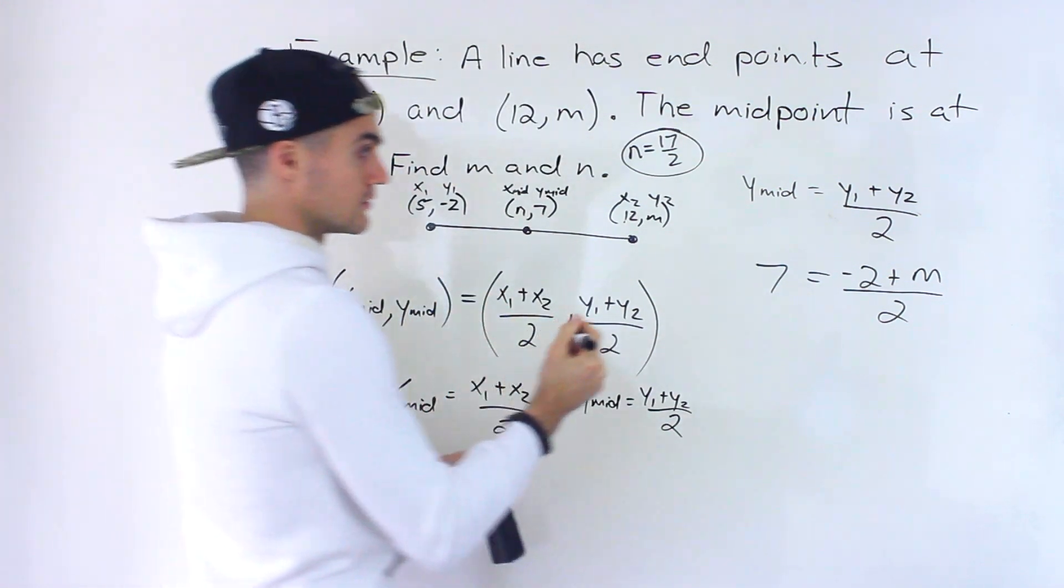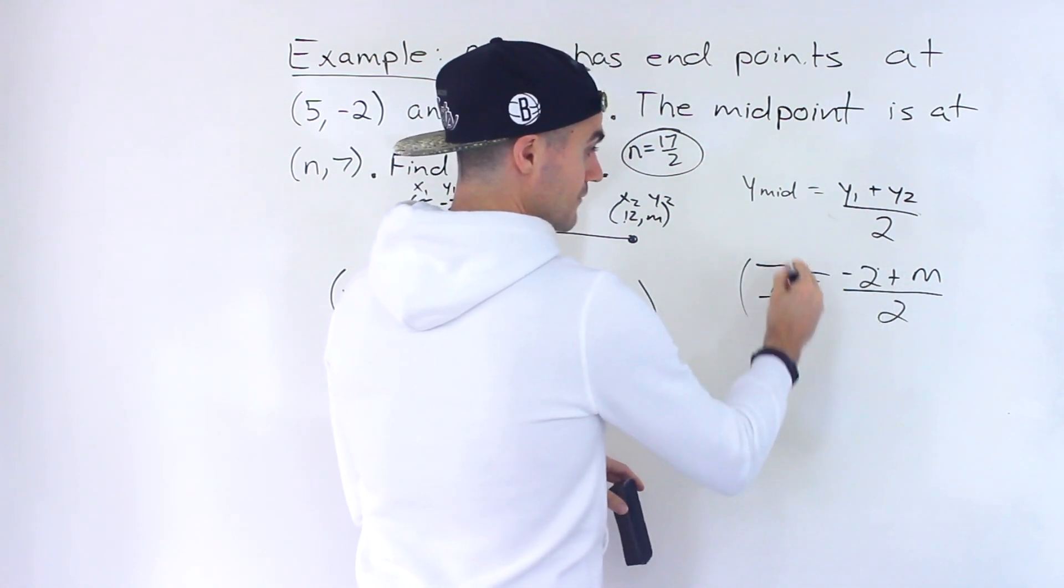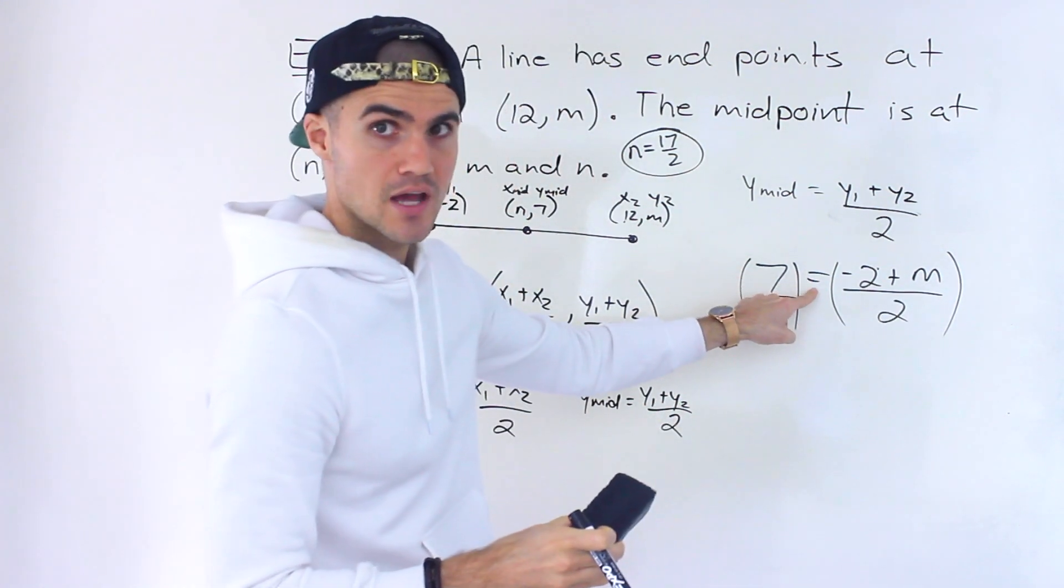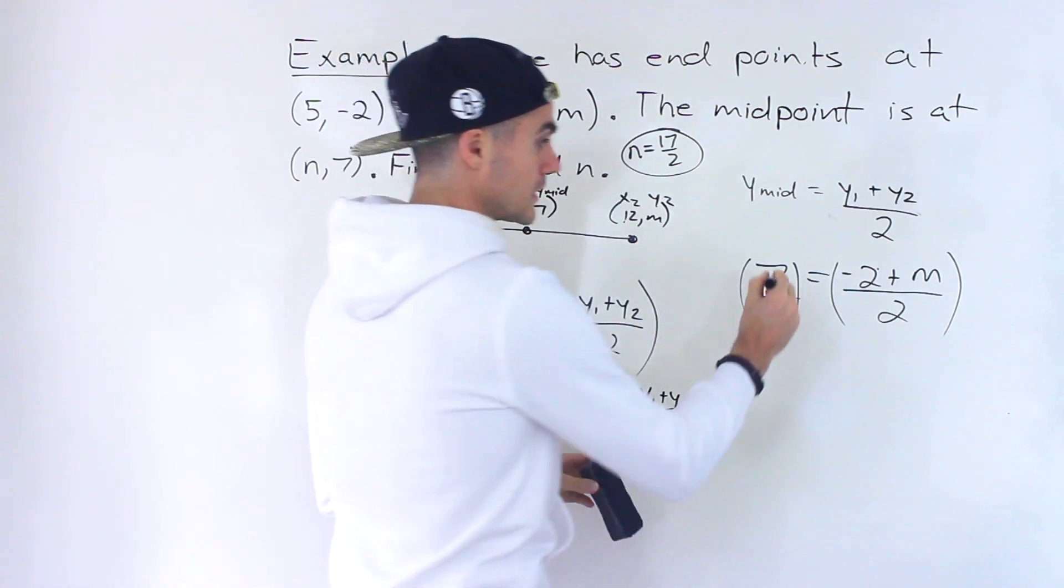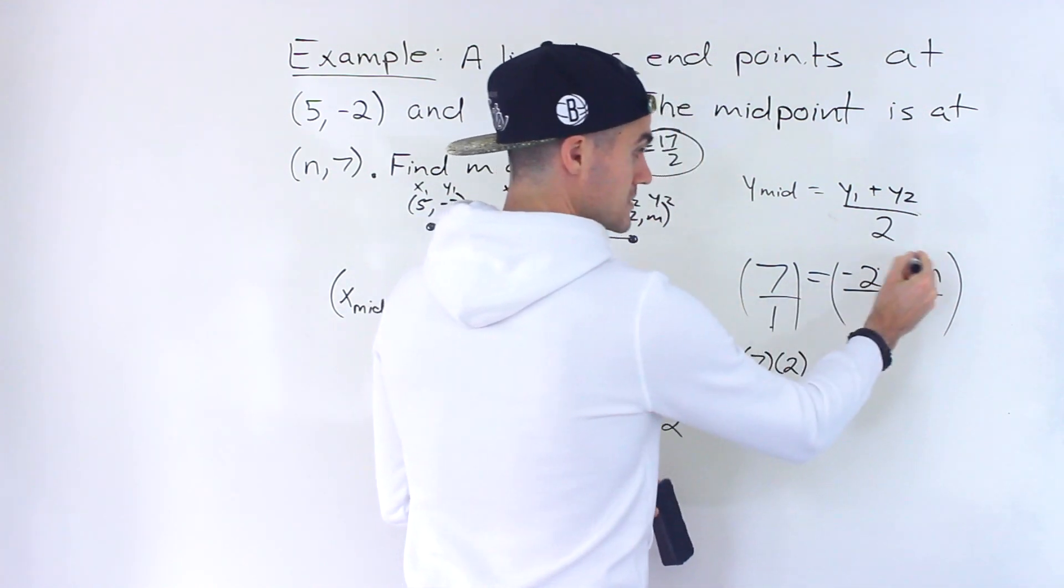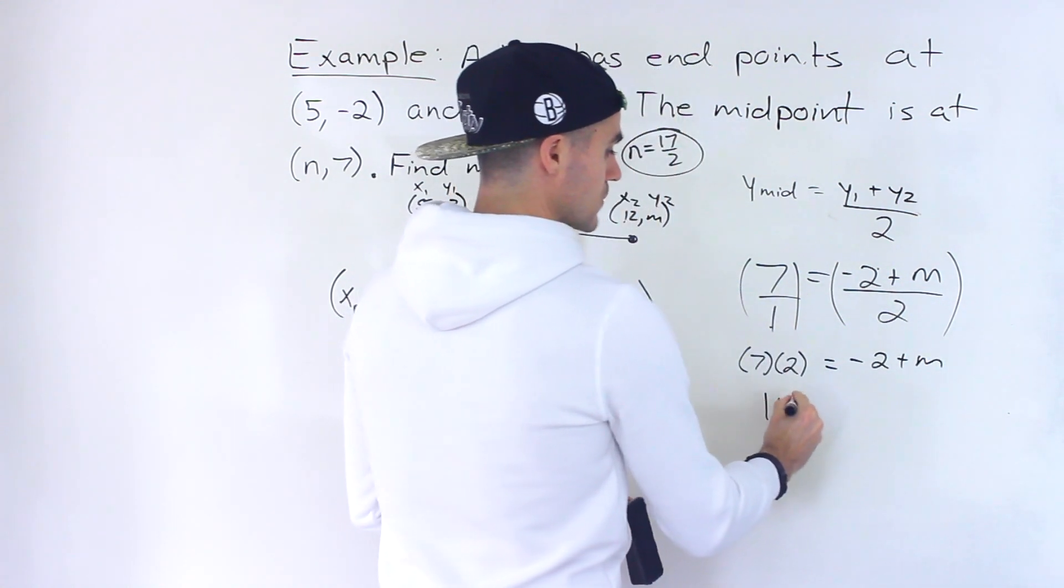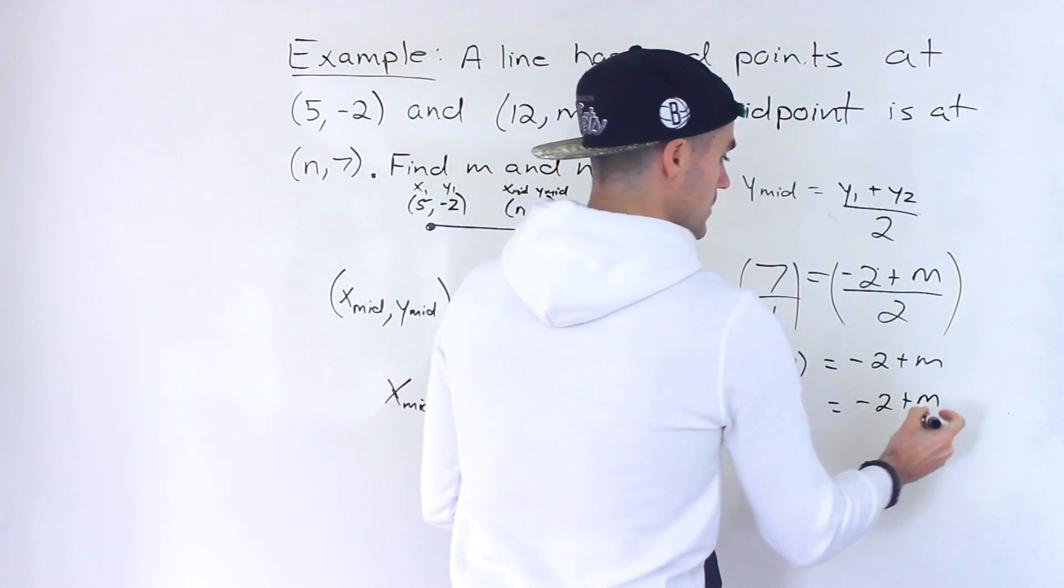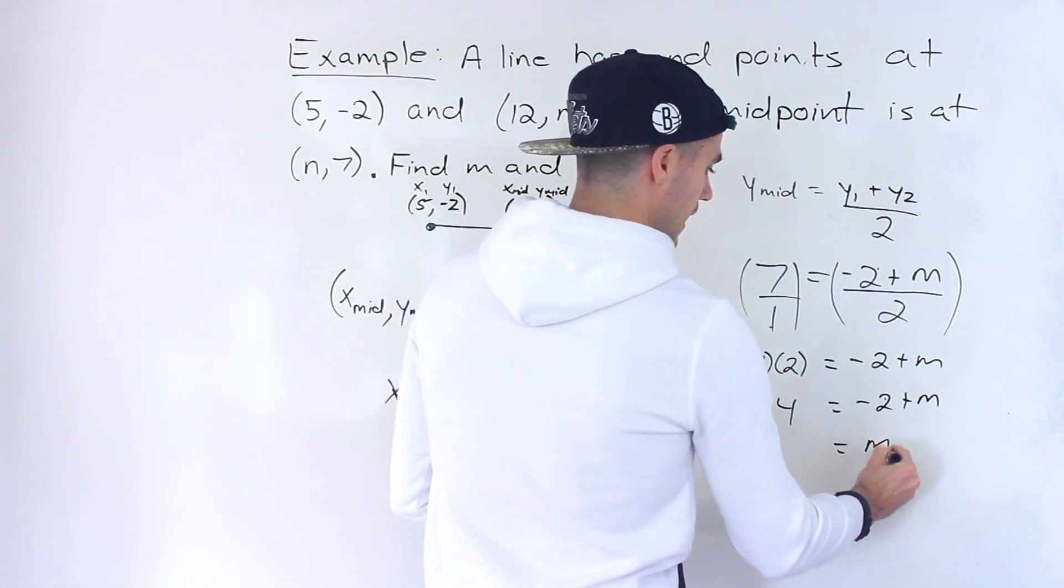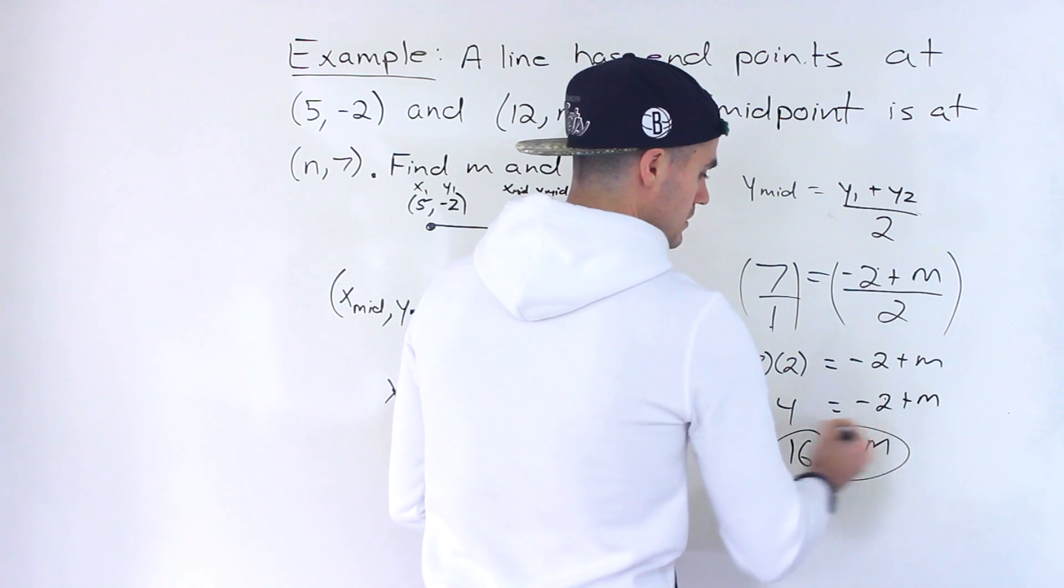So you've got to solve this. And then what we can do is put the 7 over 1 and then just cross multiply, because we have a single fraction on each side. When you have a single fraction on each side of the equal sign, you can cross multiply. So we'd have 7 times 2 equals 1 times this entire expression, which is just -2 plus m. So we'd have 14 equals -2 plus m. The m is positive, so let's keep it on the right side. Let's bring the -2 over. m would be 14 plus 2. When this comes over, it becomes a positive. m would be 16.